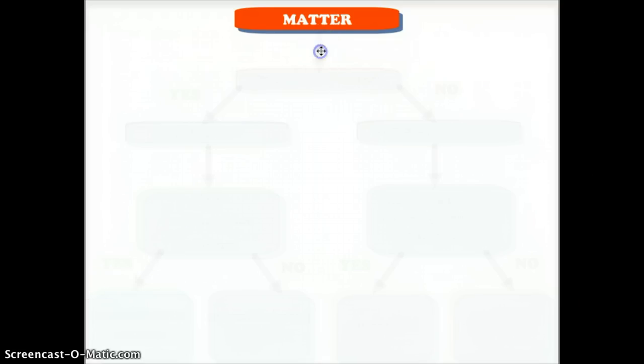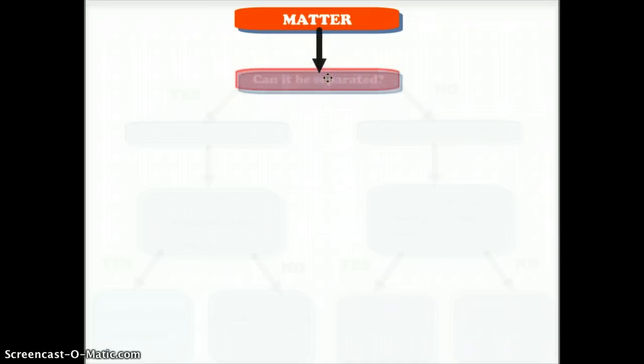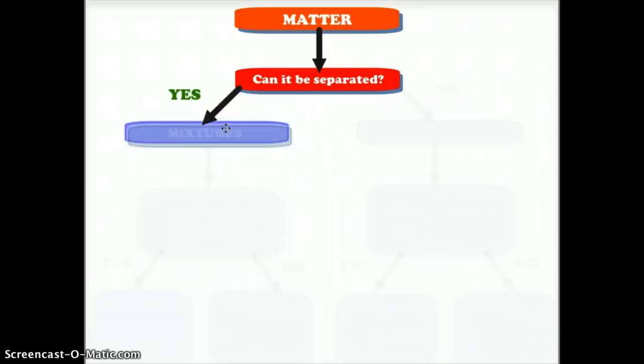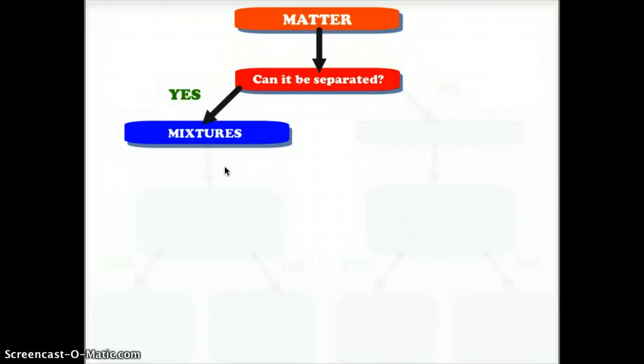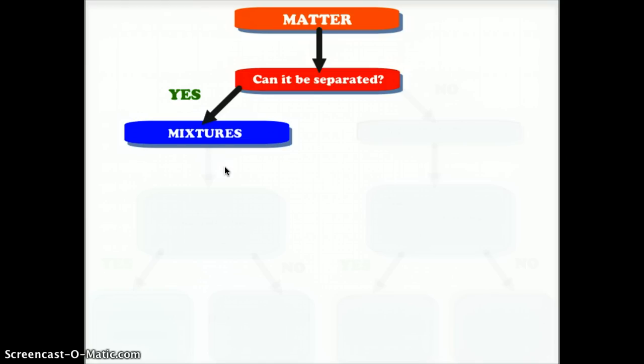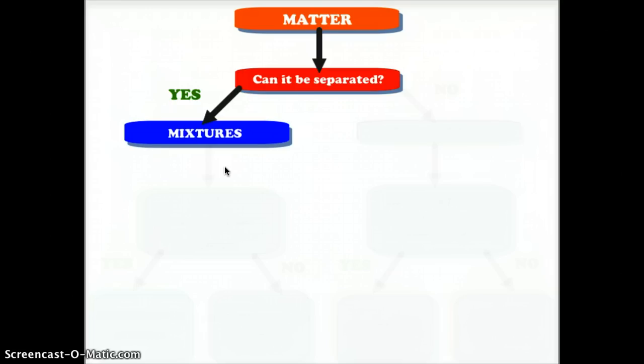That question is: can it be separated? If the answer is yes, then we have what is called a mixture. A mixture would be soil or a bowl of mixed nuts. It's easy to divide the Brazil nuts from the cashews, the cashews from the macadamia nuts. This is a mixture.